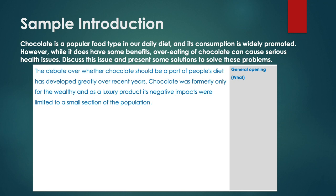Let's look at a sample introduction for this problem solution essay about chocolate. This introduction is divided into the What, Why, and How parts. The general opening — the What — is in blue: 'The debate over whether chocolate should be a part of people's diet has developed greatly over recent years.' It tells us that in the past, only the wealthy ate chocolate as it was a luxury product, so its negative effects were limited. This gives us some background information.